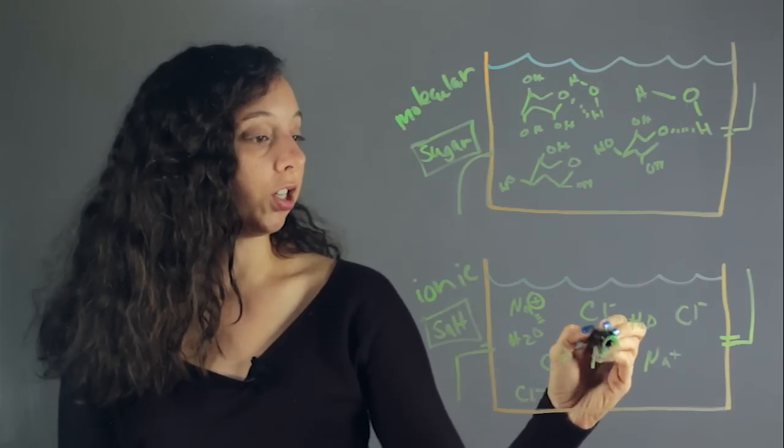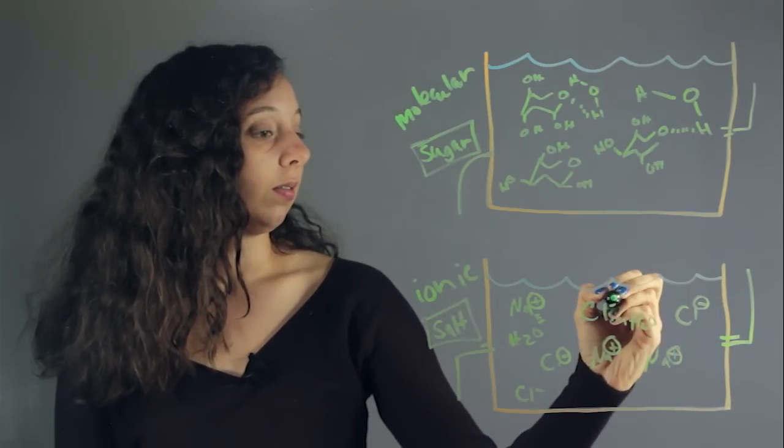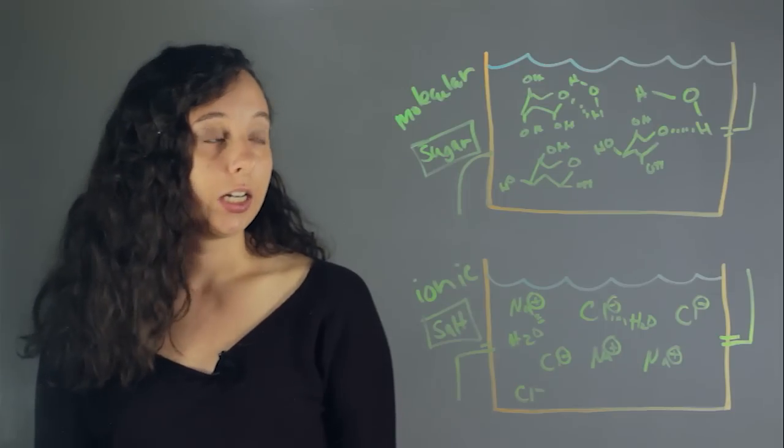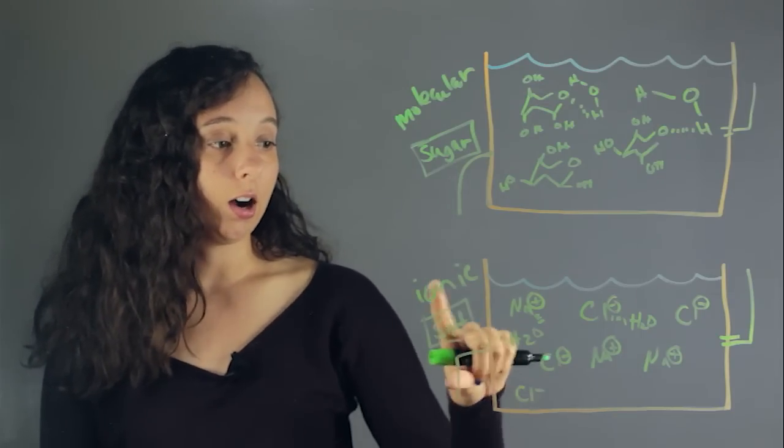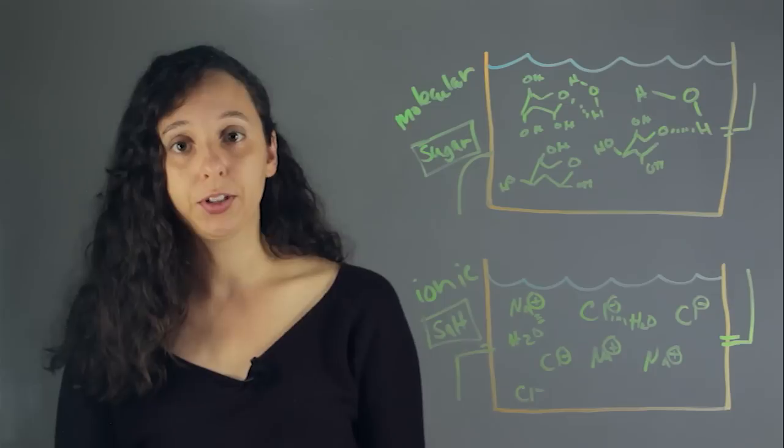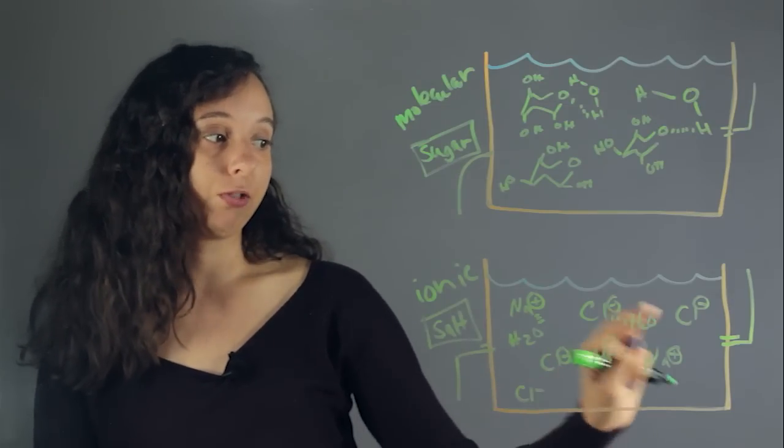in this, we have complete charges. And in this, everything's pretty neutral, you don't have actual charges. And this is why ionic compounds are much better conductors than molecular or covalent compounds, because you already have a separation of charges.